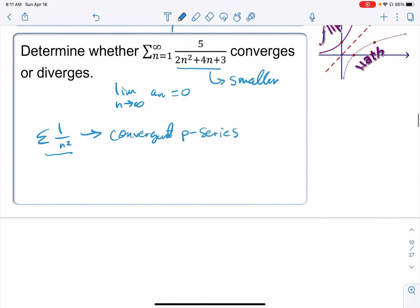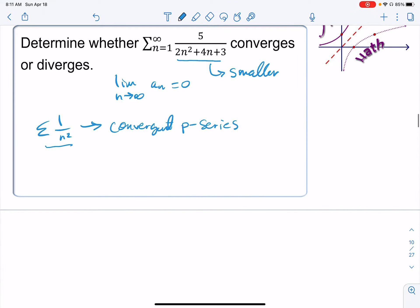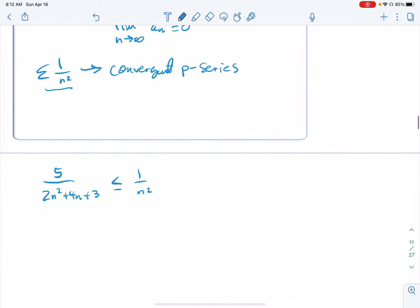Alright, so let's try that. So I have 5 over 2n² + 4n + 3 is less than or equal to 1 over n². Is that true? I don't know.